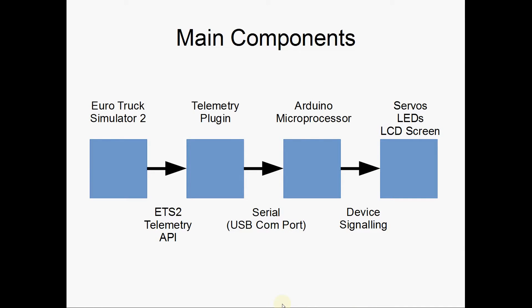This diagram shows the data flow through the system. The game provides data to the plugin via the telemetry API. The plugin then converts and packetises the data and sends that over the serial port to the microprocessor, which unpacks the data and signals the devices.